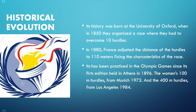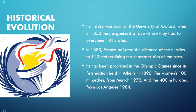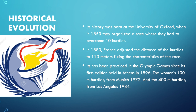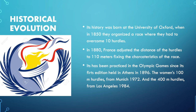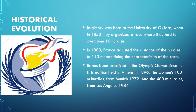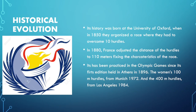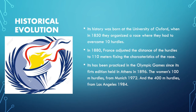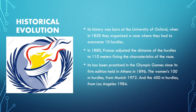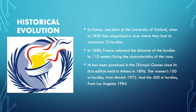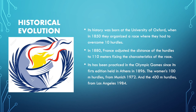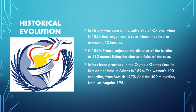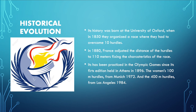Its history was born at the University of Oxford, when in 1850 they organized a race where they had to overcome 10 hurdles. Then in 1880, France fixed the distance of the hurdles race to 110 meters, establishing the characteristics of the race. It has been practiced in the Olympic Games since its first edition held in Athens in 1896, the women's 100 meters hurdles from Munich 1972, and the 400 meters hurdles from Los Angeles 1984.